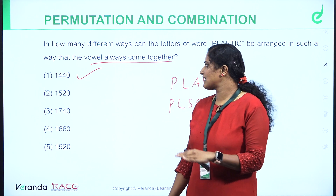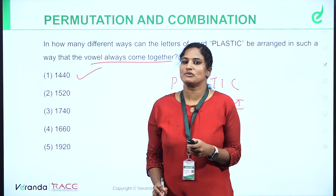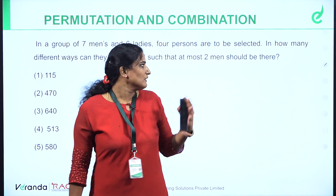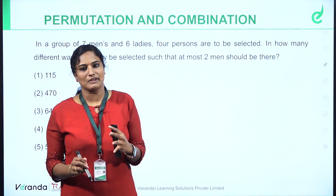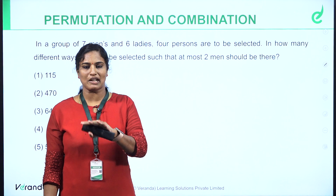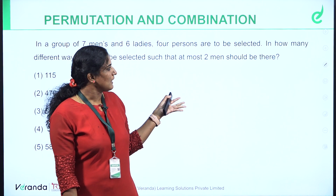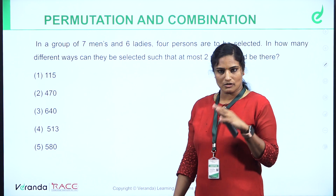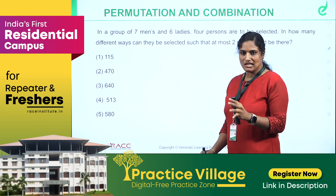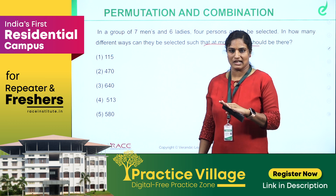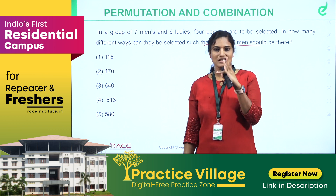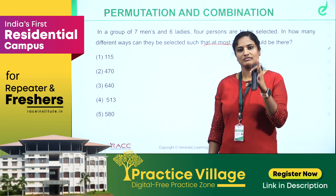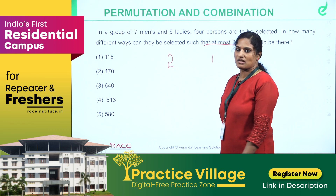The next question: in a group of seven men and six ladies, four persons are selected. Is it permutation or combination? Combination — because it is a selection. The criteria: at least two men should be there among the four persons. So we have three possibilities: two men, one man, or zero men among four — and we need at least two men.